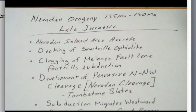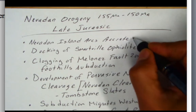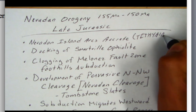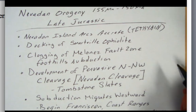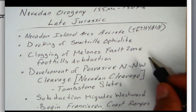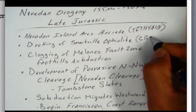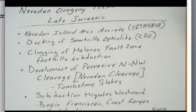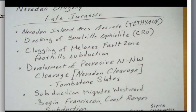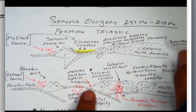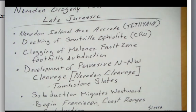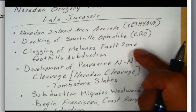This one includes accreting those Nevada island arcs with the Tethian affinity. And then you're going to dock this Ophiolite, this Smartville Ophiolite, which is really going to be part of this Coast Range Ophiolite. These island arcs are going to, once they subduct into that Maloney's fault zone, that foothill subduction zone, clog up that subduction zone and cause subduction to really focus back over here, where it's happening under these arcs. So here — clogging of Maloney's fault zone in that foothill subduction.